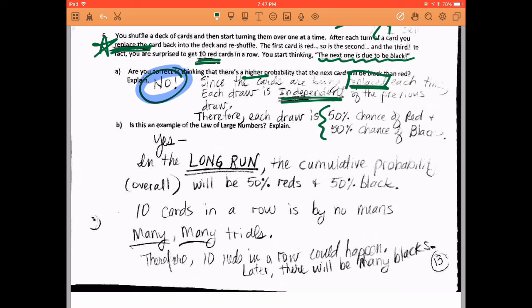So then that takes us into the next one about if this is an example of the law of large numbers. And so that is, yes, this does play into what's happening with the law of large numbers. Because we know from the law of large numbers that in the long run, as you do many trials, many, many, many, many, many trials, the cumulative overall probability will be 50% reds and 50% blacks. And 10 cards is not many, many, many trials. So you have not done many. You are not anywhere close to many. So it's possible to have 10 reds in a row. It just means somewhere on down the line you're going to have more blacks. But you don't know for sure that the next one is going to be a black. It's still a 50-50 chance.